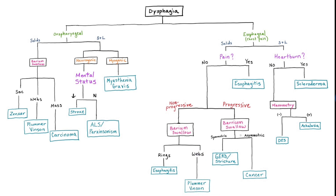Or again, Plummer-Vinson syndrome with upper esophageal webs. Lastly, for esophageal dysphagia with trouble swallowing both solids and liquids, we will suspect an underlying neuromuscular disorder affecting motility. If there are symptoms of heartburn, suspect scleroderma, where the lower esophageal sphincter remains too open, allowing gastric contents to travel up, similar to GERD.